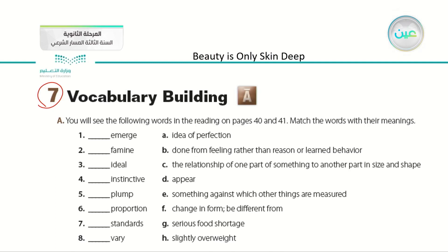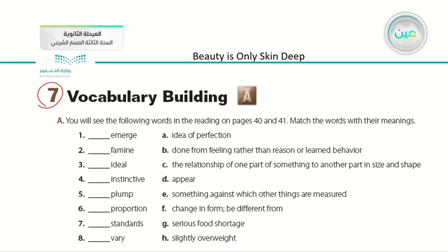We started with emerge — something that comes from nowhere into existence. Famine means people dying from the shortage of food. Ideal means something perfect. Instinctive means something following feeling, not reason. Plump means chubby or stocky. Proportion is the suitability or fitness of something. Standards are measures. And vary means changes from someone or something to another.